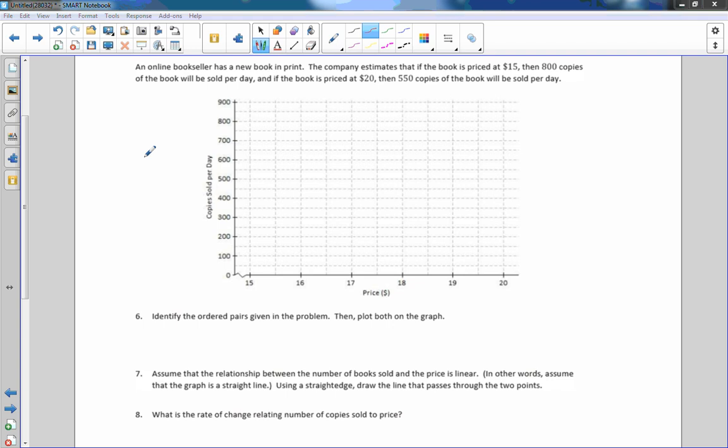Next problem says an online bookseller has a new book in print. The company estimates that if the book is priced at $15, then 800 copies of the book will be sold per day. If the book is priced at $20, then 550 copies of the book will be sold per day. Identify the ordered pairs given in the problem, then plot them on the graph. So $15, 800. That would be the point (15, 800). Then I will plot the point (20, 550). If the book is $20, less people will buy it. The cheaper it is, the more they're buying. So the cheaper the book, the more purchases.